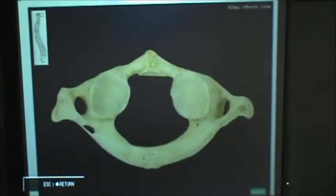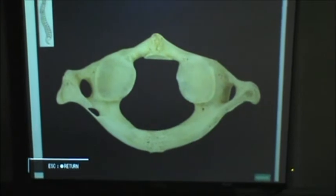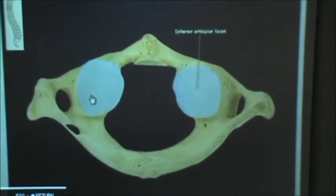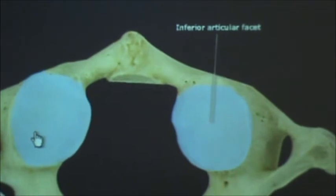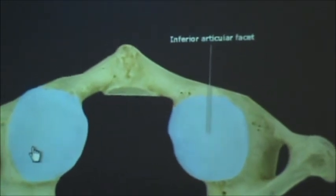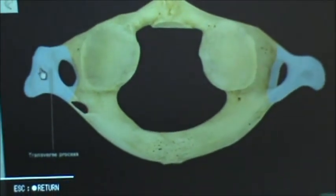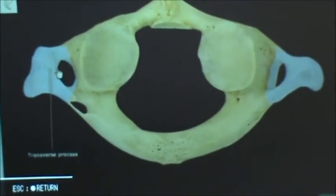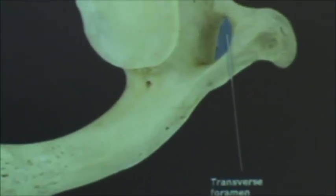Now we're going to go to the inferior view of the atlas which is right here. On this side we have the inferior articular faucet or the inferior articular process, and then the transverse process on both sides, and then the holes in the middle are the transverse foramen.